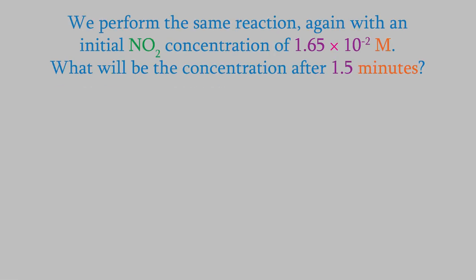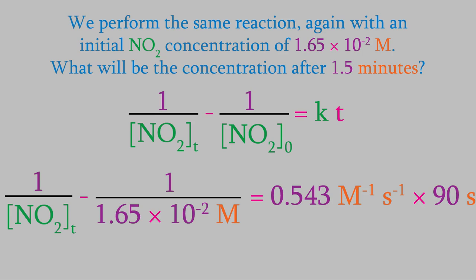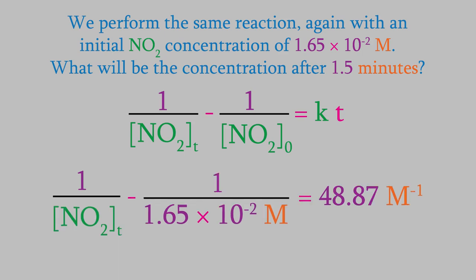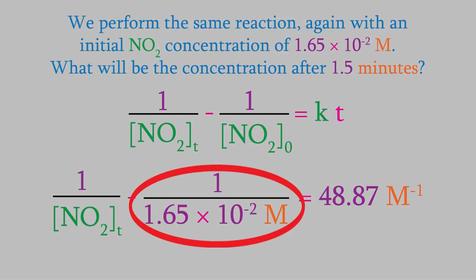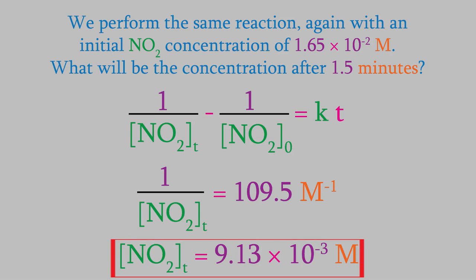Let's try another problem. Suppose we perform the same reaction, still starting with a concentration of 1.65 × 10⁻² molar. What will be the concentration after the reaction has been going for 1.5 minutes? We use the same equation as last time, but this time our unknown isn't T — it's the final concentration AT. First we'll plug in all the other data. Don't forget that the rate constant has seconds in its units, so we need to convert the time into seconds. We solve the right side of the equation, which gives us 48.87 M⁻¹. Next we add this fraction to both sides, which gives us 109.5 M⁻¹ on the right side. When we solve for AT, we get 9.13 × 10⁻³ molar — so that's our final concentration.